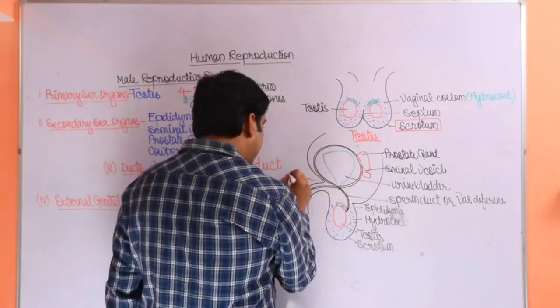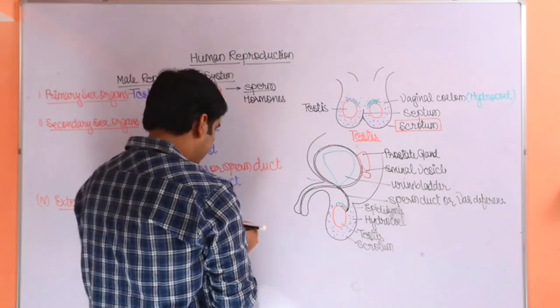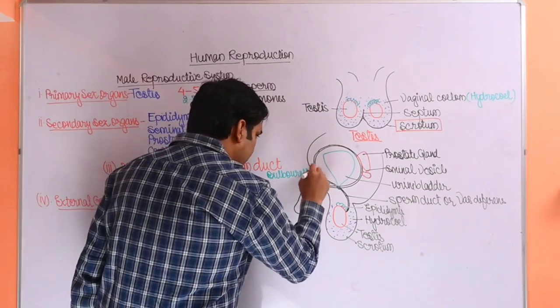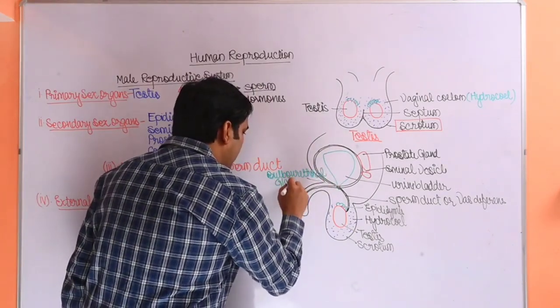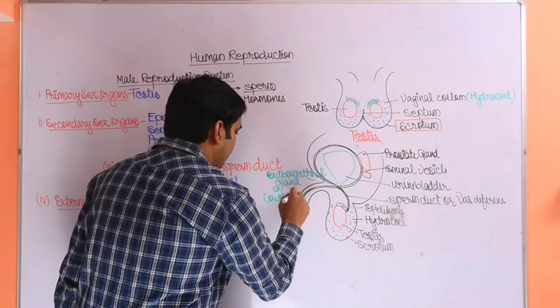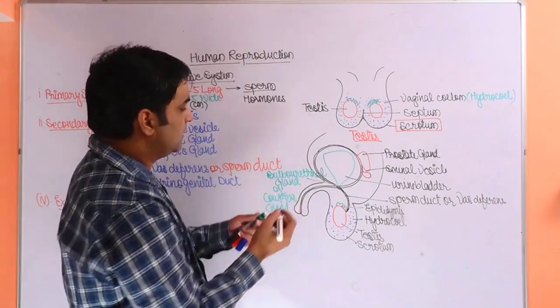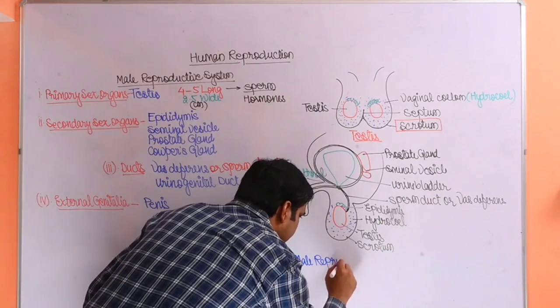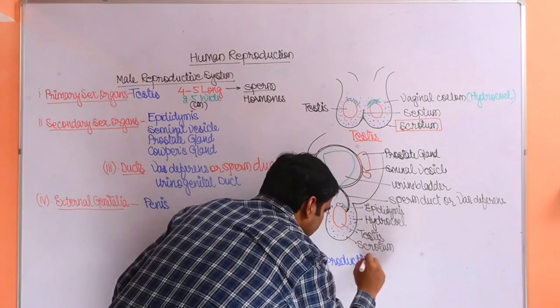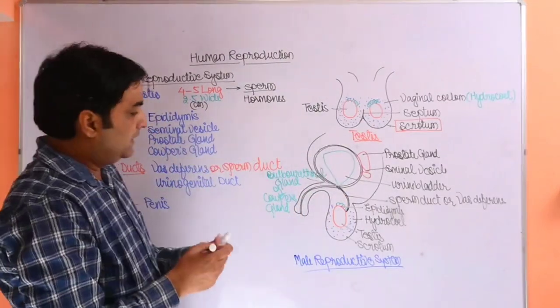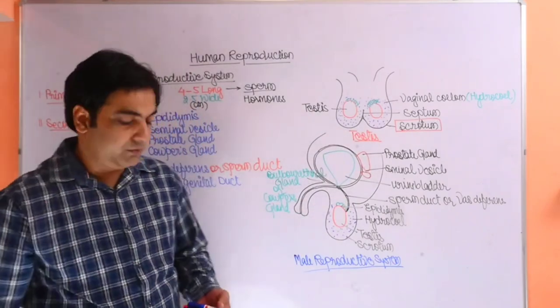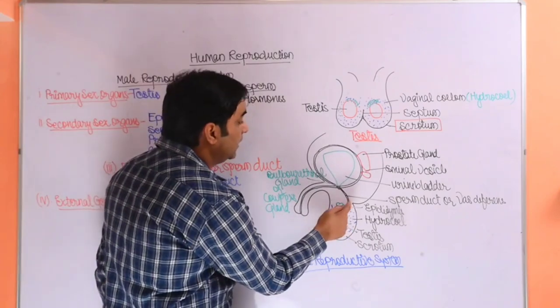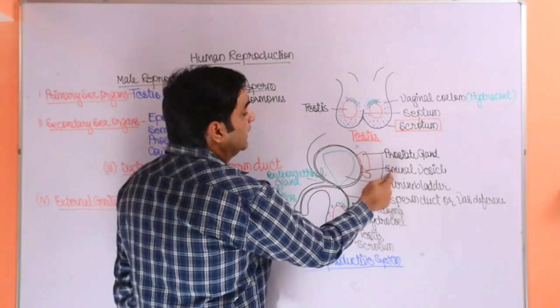Here somewhere the cowper's gland is present, which is also called bulbourethral gland. This is the structure of male reproductive system. The sperm is released from testes, and then the epididymis stores it.